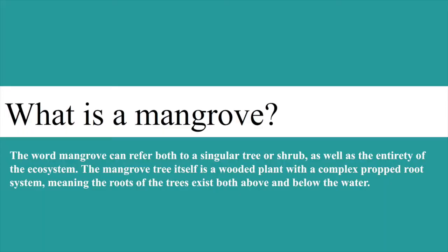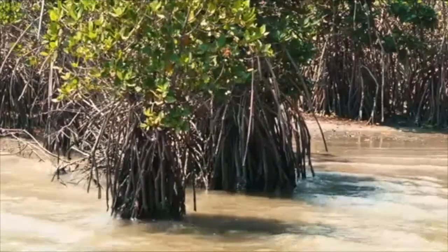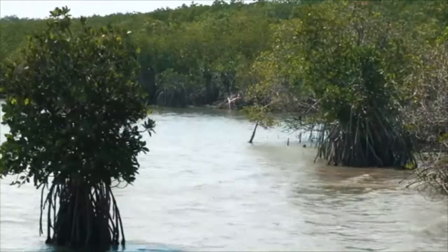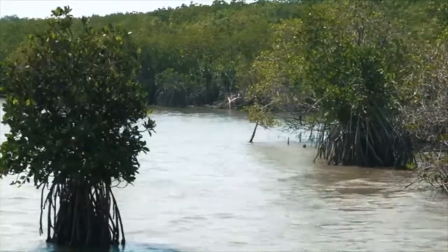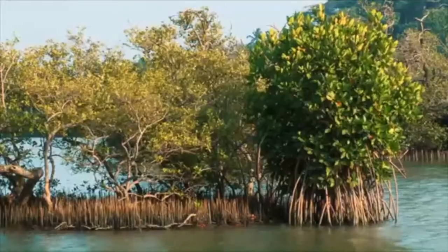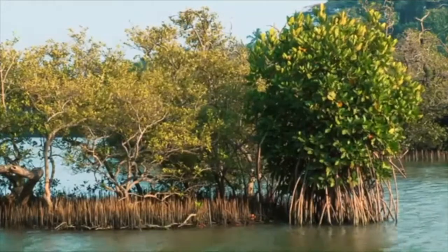The word mangrove can refer both to a singular tree or shrub as well as the entirety of the ecosystem. The mangrove tree itself is a wooded plant with a complex propped root system, meaning the roots of the trees exist both above and below the water. Such a system is advantageous for mangroves as it allows the trees to thrive even when flooded twice a day due to tidal changes.